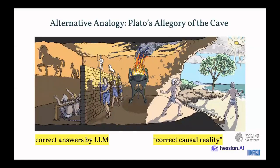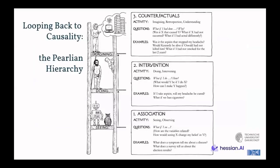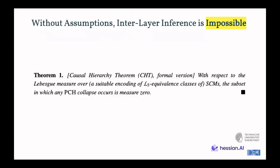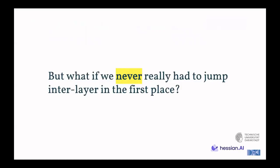Looking back now to Pearlian causality, there's the famous causal ladder. There's three rungs, association, intervention, and counterfactuals, out of which only rung two and three are considered causal. And there's the famous impossibility result that without assumptions, interlayer inference is impossible. So the causal hierarchy theorem says that there's no collapse, so measure zero collapse, of these classes in between, which suggests to you that without assumptions, you cannot go from associational to interventional information. And while this might seem destructive at first, it really is a reassuring result that causality still makes sense. But what if we never really had to jump interlayer in the first place? This is the key question that we raise here for the formalization of this correlation of causal facts idea.